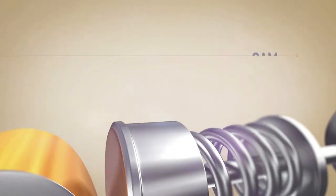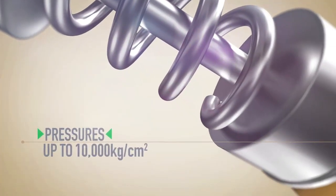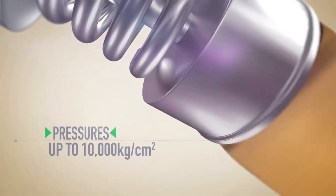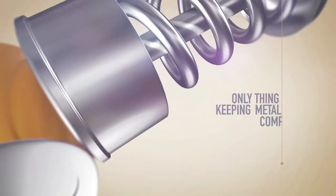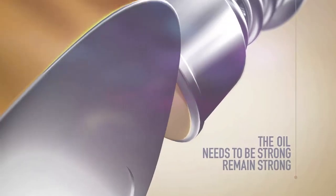In areas like the cam and the follower, oil needs to withstand pressures up to 10,000 kilograms per square centimeter. The only thing keeping metal components apart is the oil, so it needs to be strong and remain strong.